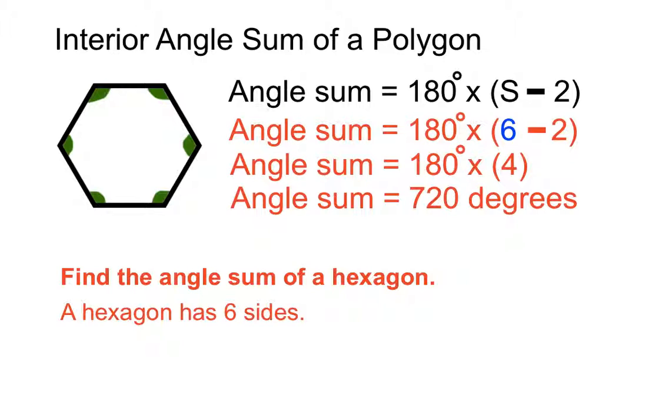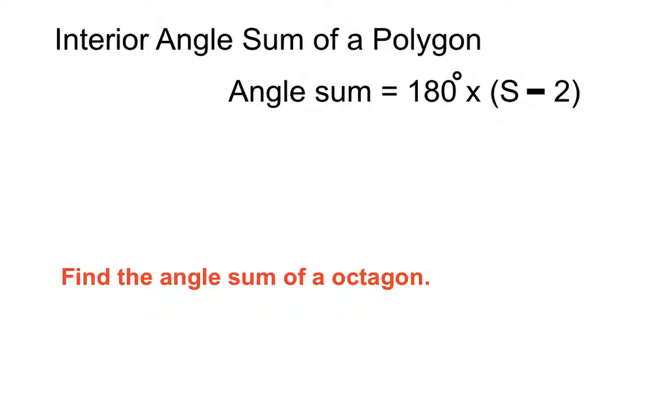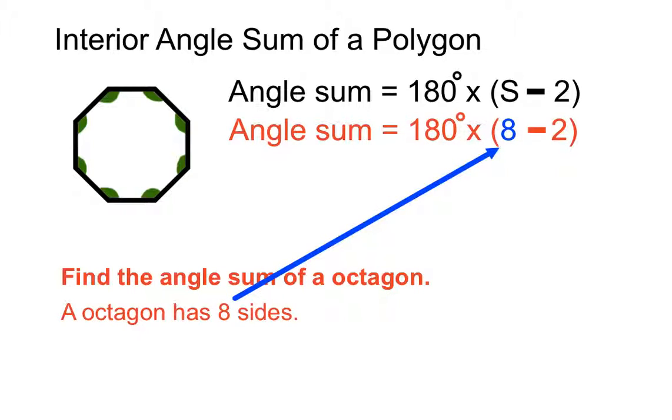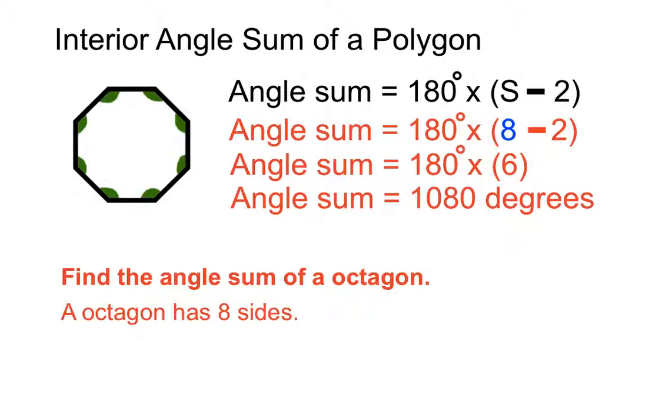And we'll do one more using this formula, and that's the octagon. And so, an octagon has 8 sides, so we'll put an 8 where the s is into our formula, and when we do 8 minus 2 from the bracket there we'll get 6. So an octagon has 6 lots of 180 degrees worth of angle size, and so angle sum 1080 degrees for an octagon.